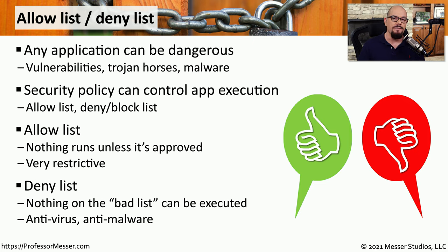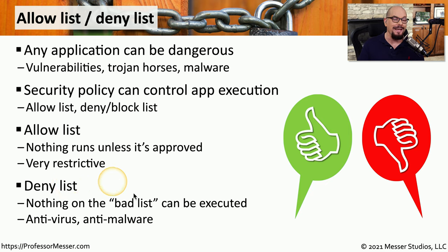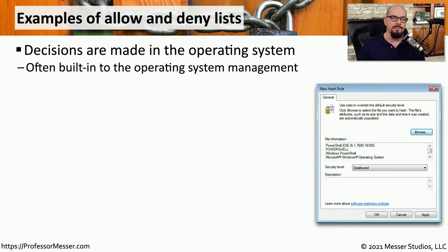Some organizations have a more open approach and will only prevent applications that are on a specific deny list. If an application tries to run and it's listed on the bad list, it will be stopped before it executes. Most operating systems have methods built into the OS that allow the administrator to set up allow lists and deny lists, and these lists can be based on many different types of criteria.